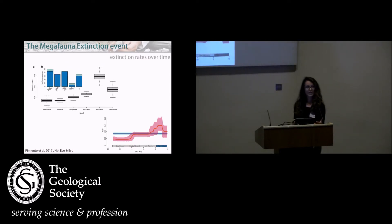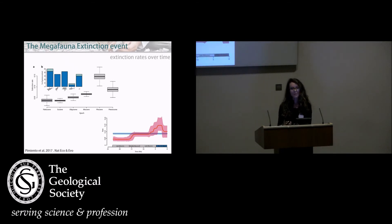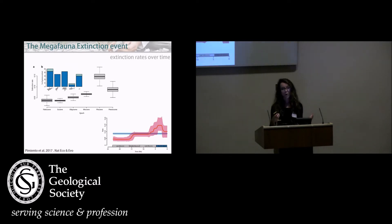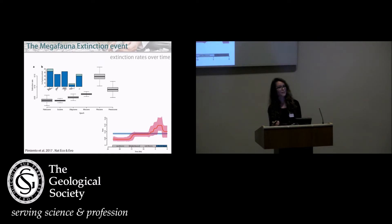Looking at proportional extinctions, we found that different taxa and different clades were affected differently. Mammals and turtles were more affected than sharks, for example. But when you take the whole marine megafauna as a whole, we found that 36% of the Pliocene taxa failed to cross to the Pleistocene — so one-third of marine megafauna became extinct.